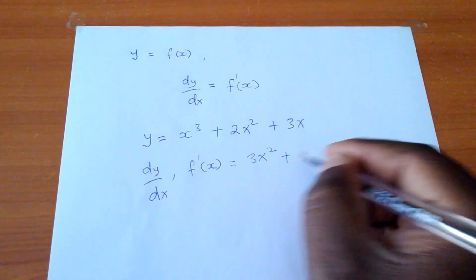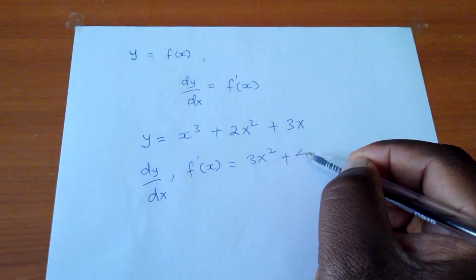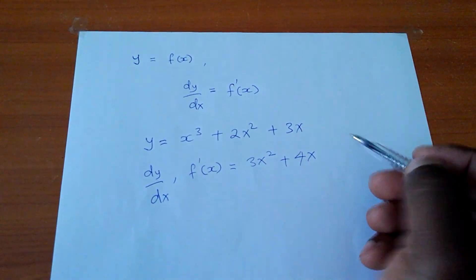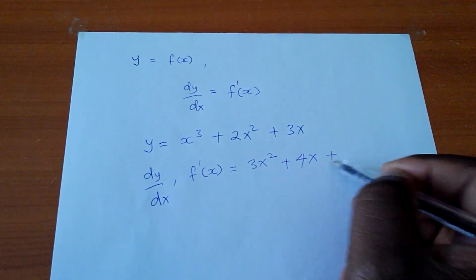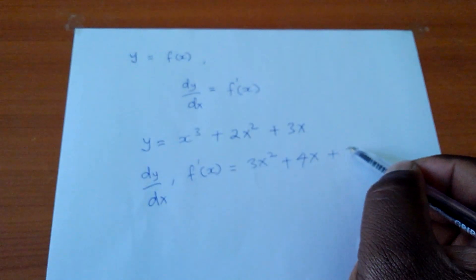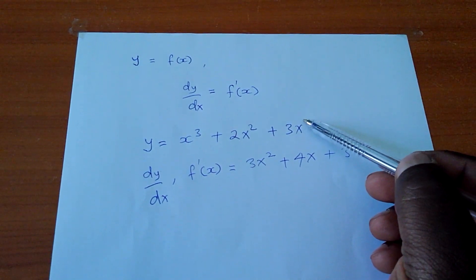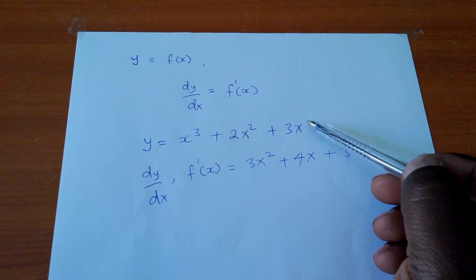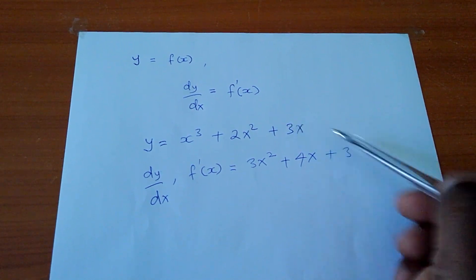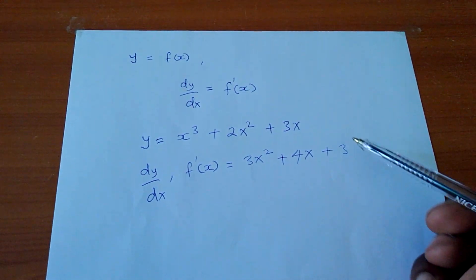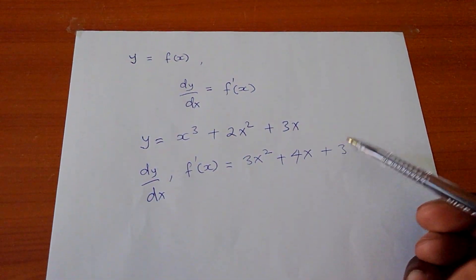Here I will get 4x to power 1, even though I don't write 4x to power 1, it will still be x. Then here I'll get plus 3. Remember here it is to power 1, if I multiply 1 times 3 I'll get 3. Now 1 minus 1 will be 0. Anything to power 0 is 1, so 1 times 3 is 3.